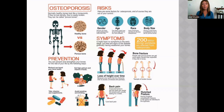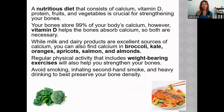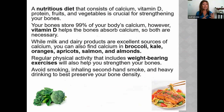For those who are lactose intolerant, other sources of vitamin D include broccoli, kale, oranges, apricots, salmon, and almonds. Your bones store about 99% of the calcium, but vitamin D helps your body absorb that calcium — both are important. Vitamins and supplements help, and avoiding smoking and excessive drinking. But the very best way to help stop the progression of osteoporosis is weight-bearing exercise.